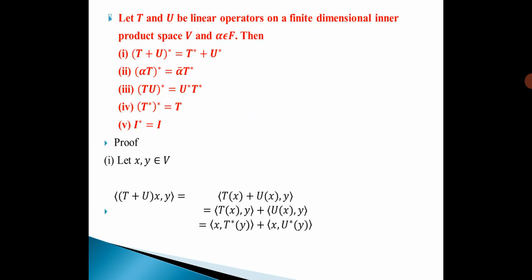Let us see the properties for this theorem. Let T and U be linear operators on a finite dimensional inner product space V, and let alpha belong to F. Then we have 5 properties: First, (T+U)* = T* + U*. Second, (αT)* = ᾱT*. Third, (TU)* = U*T*. Fourth, (T*)* = T. Fifth, I* = I.